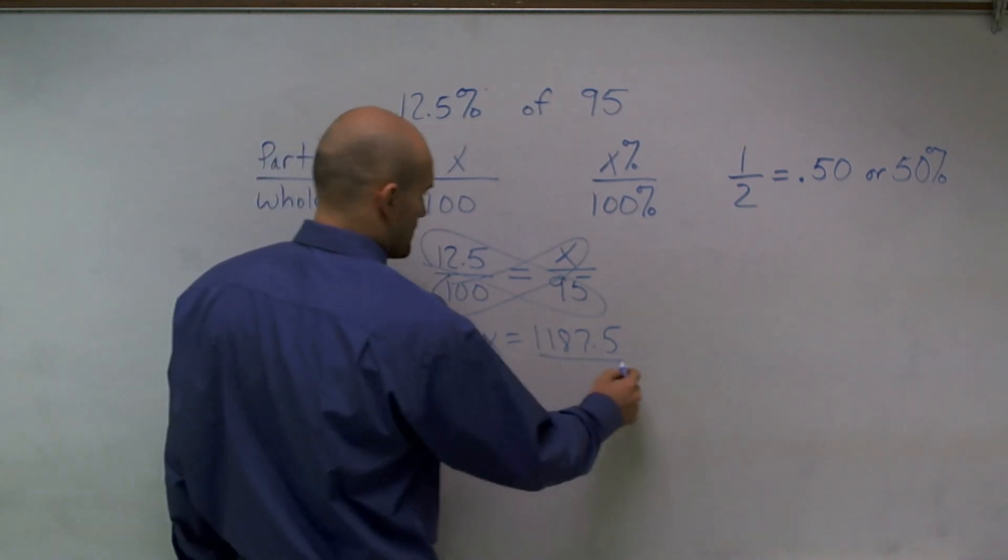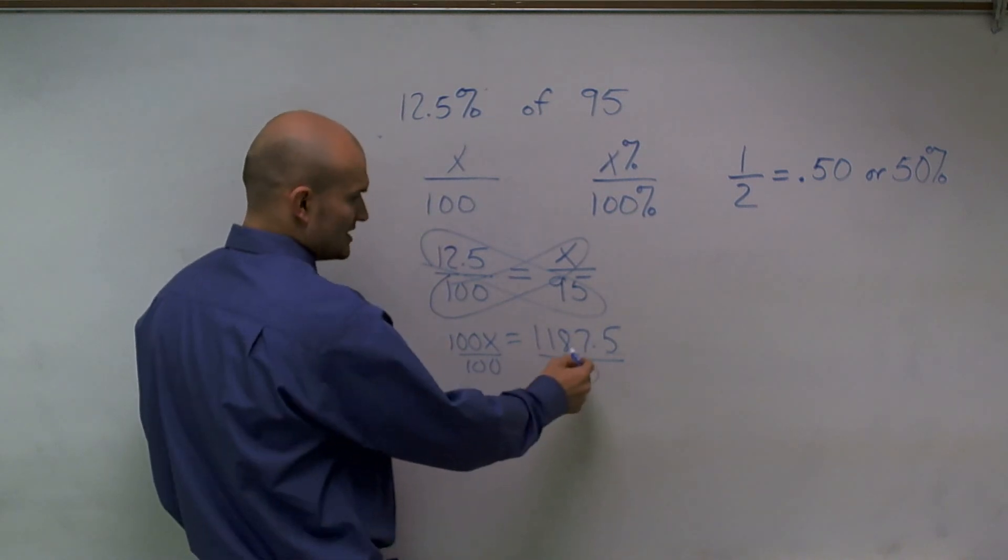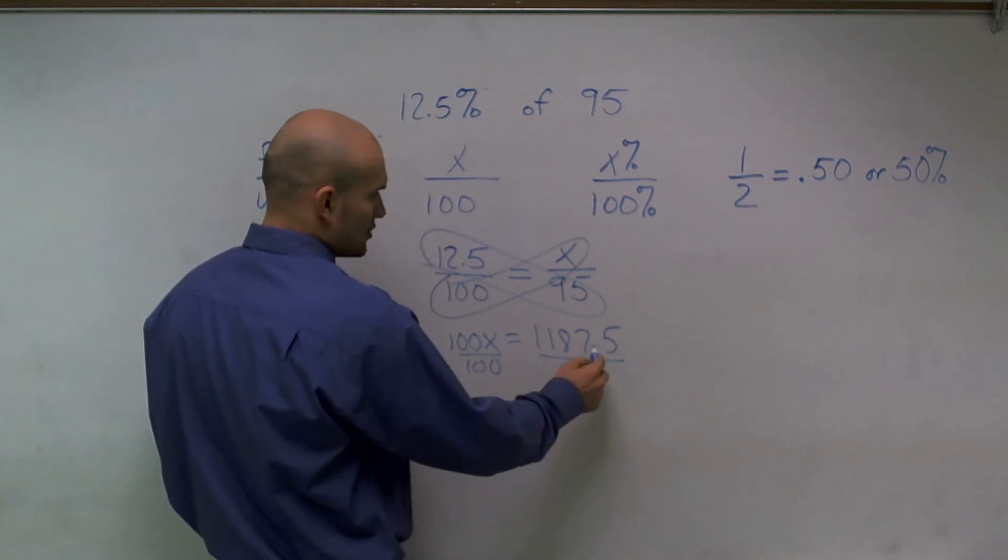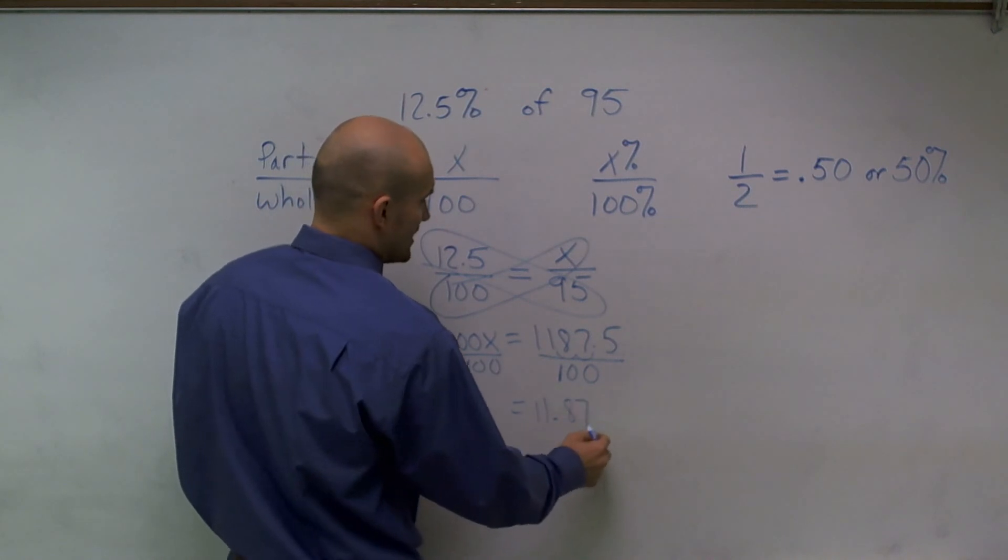I'll just divide by 100. And when divided by 100, you can see that your answer is going to be, or you can just move the decimal point over two spaces, which will be 11.875.